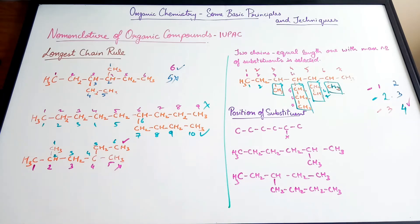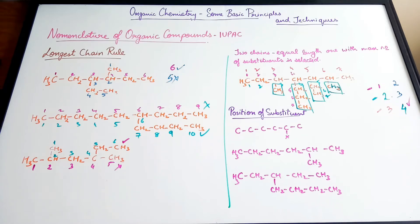That is the longest chain rule. We pick the longest chain, and if two chains are possible and of the same length, the one with the maximum substituents is selected. The next rule is the position of the substituent — this is where numbering comes in. We have a prefix, a suffix, and when you have a functional group, you need to give the number for the location where it is present. The number is going to denote the carbon atom to which that substituent is attached.